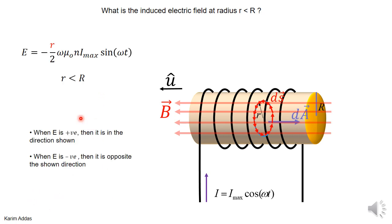So the electric field inside the cylinder is proportional to r. At r = 0 it's zero, and as you go bigger it gets larger. We already know dB/dt from before, so we just plug it in to get the value of the electric field inside. The electric field still oscillates with time via the sine function — sometimes positive, sometimes negative — so the field keeps going backwards and forwards.